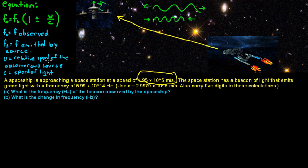u is going to be your relative speed of the observer and the source, which is going to be this 1.95 times 10 to the 5th. And then of course c is the speed of light.